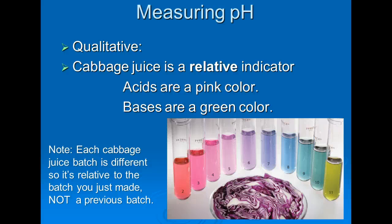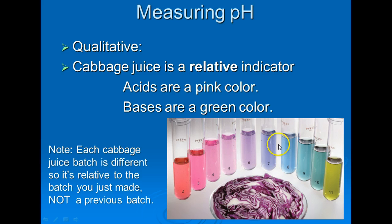Another qualitative indicator is cabbage juice, called a relative indicator. You cut up red cabbage, boil it, and collect the liquid, which has a purplish color. When you add an acid or base, it changes color. You must use red cabbage — not regular cabbage. Each batch of cabbage juice is different, so it's relative to the batch you just made. Every time you boil cabbage, the color intensity may vary, so you must make a new scale with each batch by adding known acids and bases.